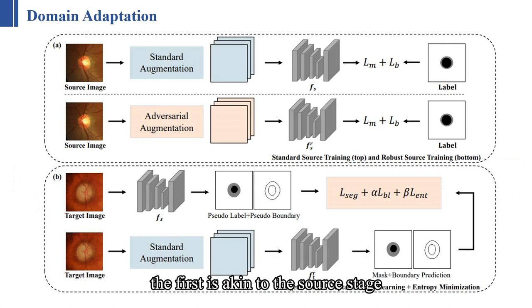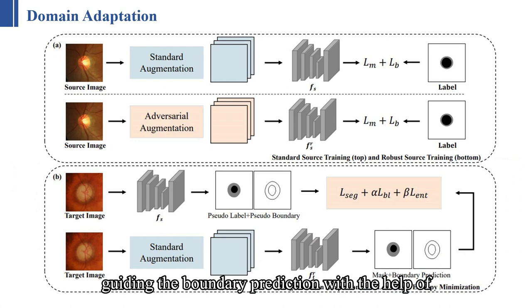The first is akin to the source stage, evaluating the segmentation of mask prediction against the ground truth mask. The second is the pseudo-boundaries, providing the boundary prediction with the help of pseudo-boundaries. Lastly, we introduce an entropy minimization loss.